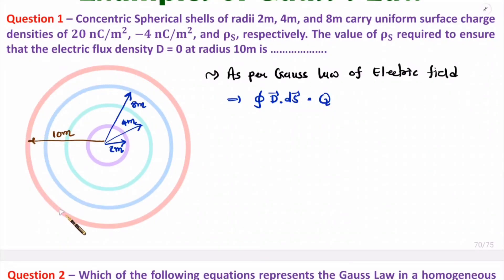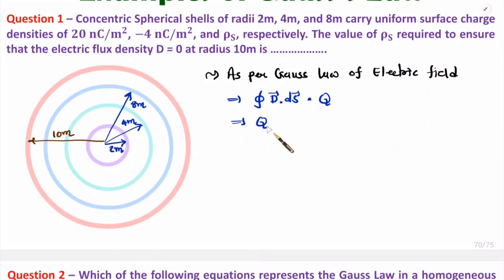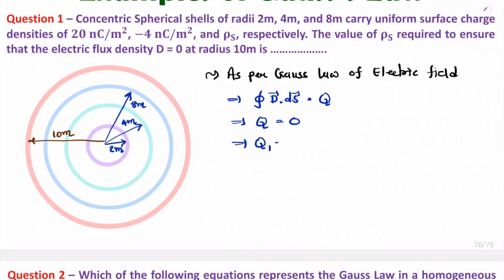We need to understand what the charge enclosed is within this outermost sphere of radius 10 meter. We have three different spheres. With the first sphere, the charge is q1; with the second sphere, charge is q2; and with the third sphere, charge is q3.